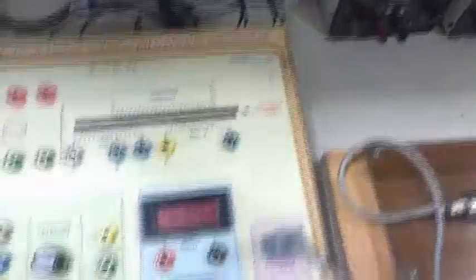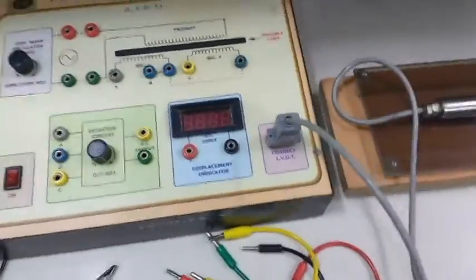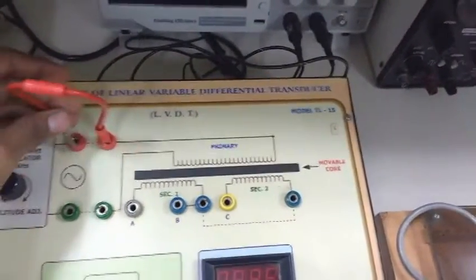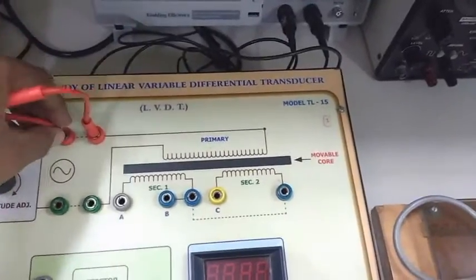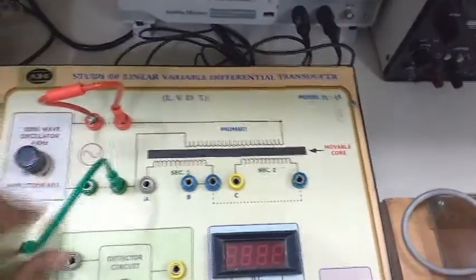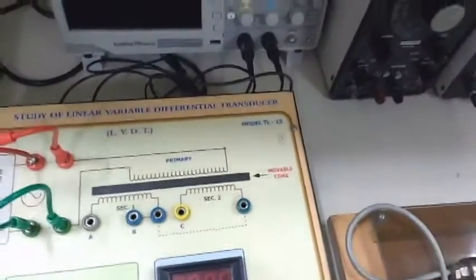So first of all, connect this red with red port and green port with green. Connect this green with green and here B is connected with blue, means this blue is connected with blue.